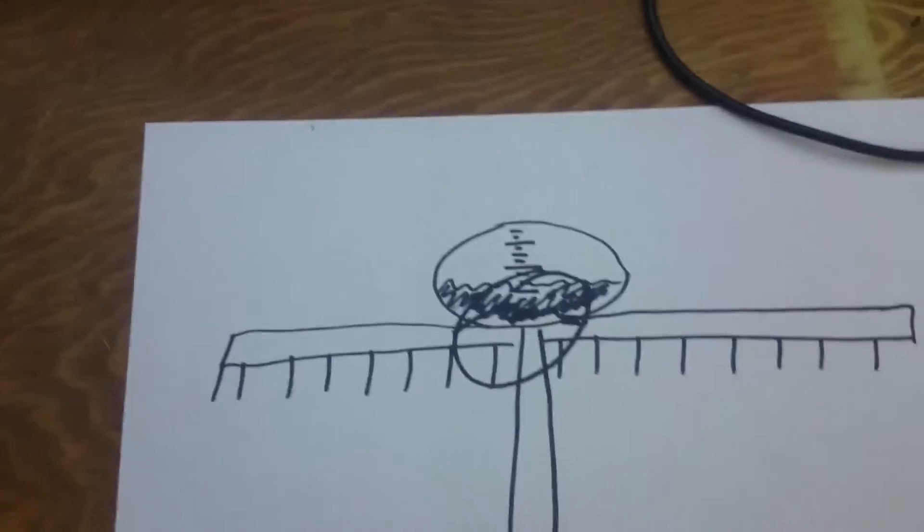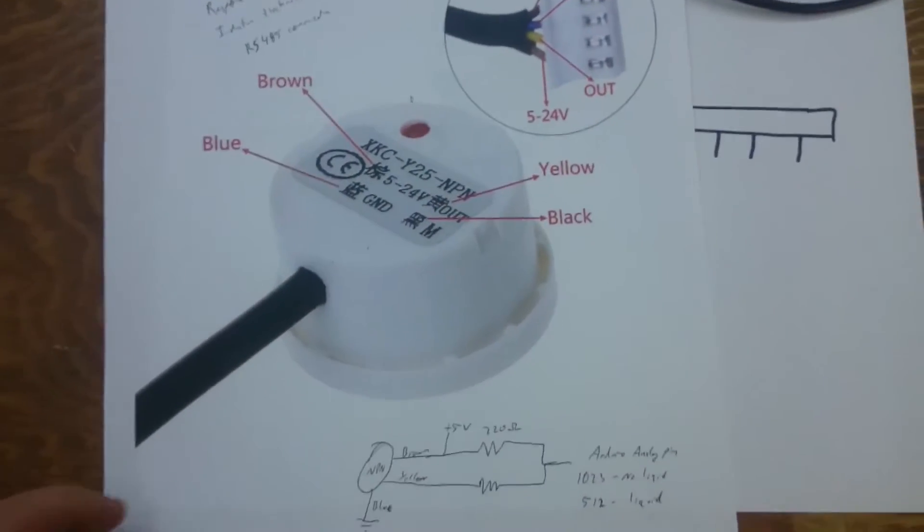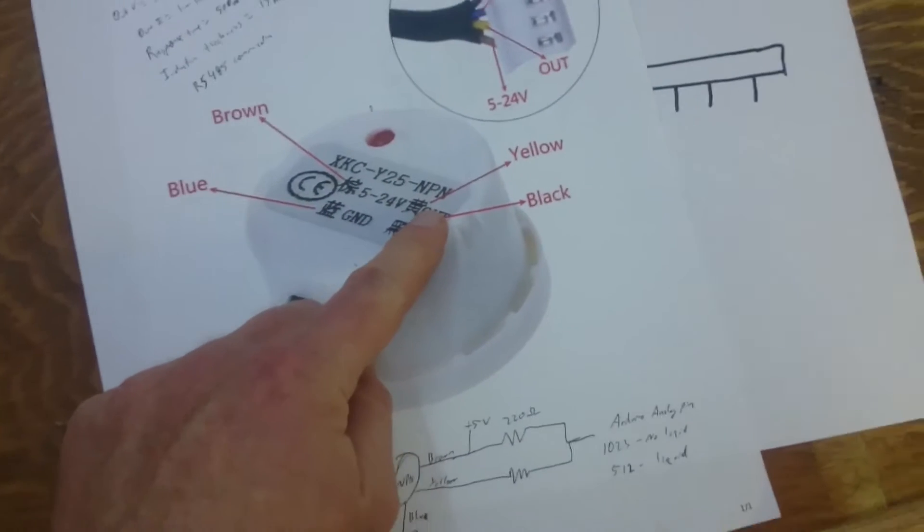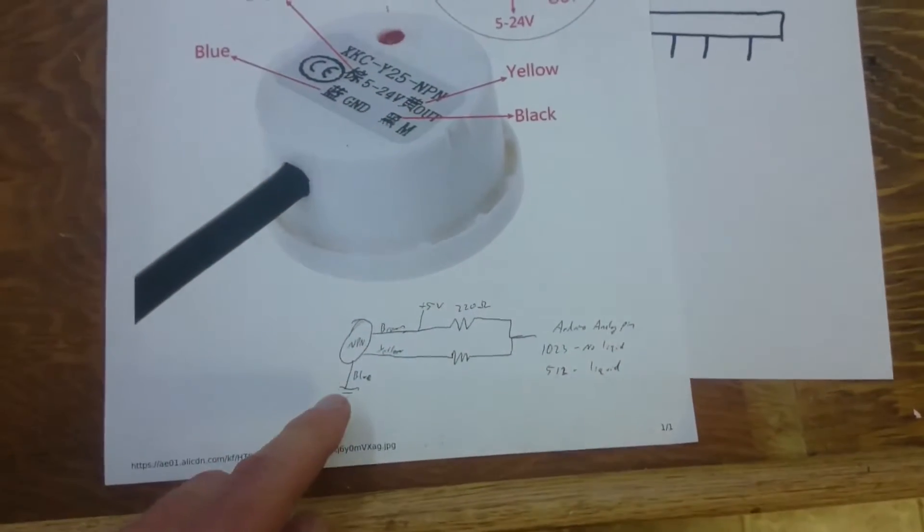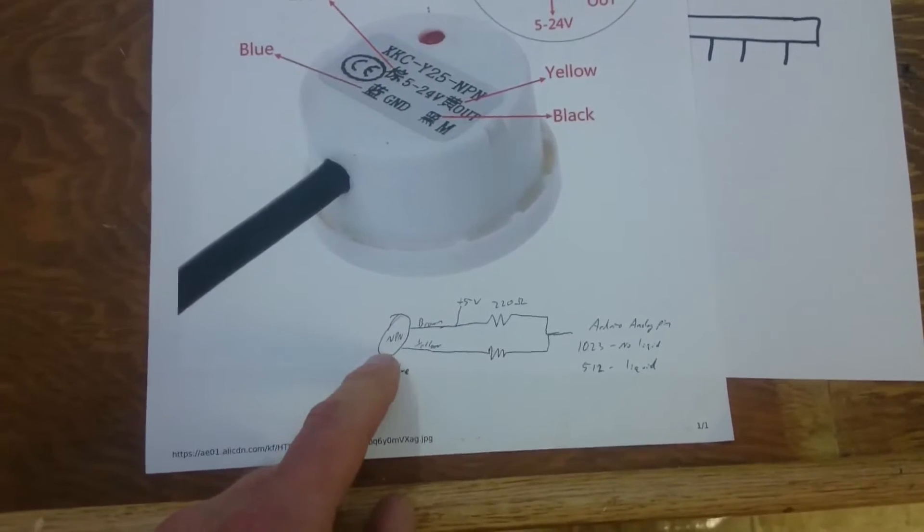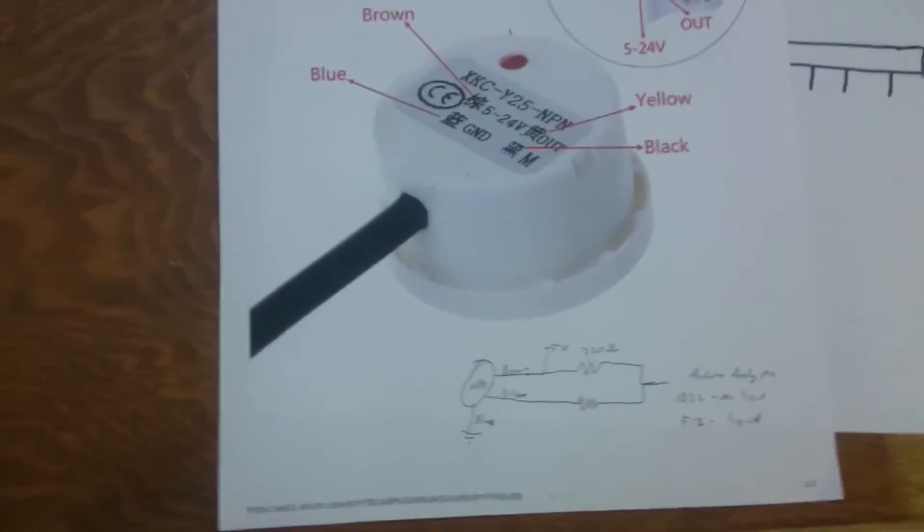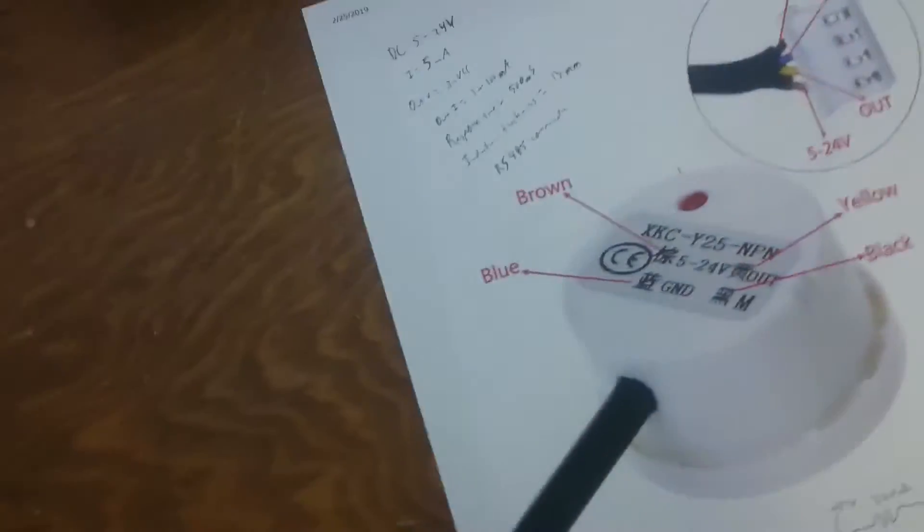Well, a non-contact liquid detector attached to the bottom of that tank is just the ticket. Now these are the NPN version of the non-contact liquid detectors. If you're going to do anything crazy like hook it up to Arduino, these NPNs are not what you want. You've got to do some funny resistor stuff. Thankfully, all we're going to be doing is hooking it up with a couple of relays.